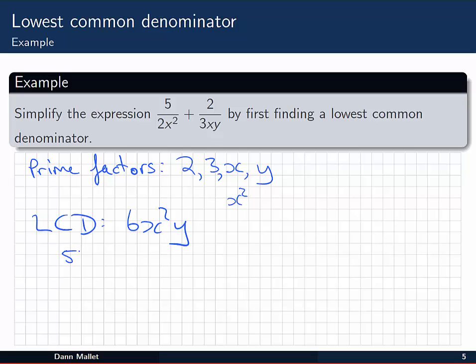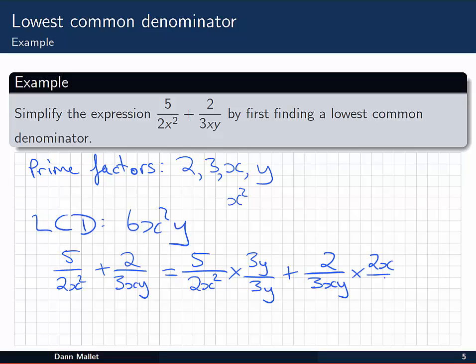Now we need to multiply each of our fractions by whatever it takes, top and bottom, to give us that lowest common denominator. So we have 5 on 2x squared. We'll need to be multiplied by 3 and y to give us the common denominator. So we have times 3y over 3y. Then 2 on 3xy needs to be multiplied by an x and a 2. So 2x on 2x. This gives us a common denominator of 6x squared y. And on the top we have 15y plus 4x. And again, this can't be reduced any further than it is at the moment.